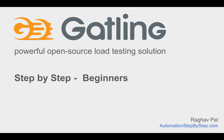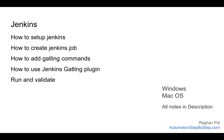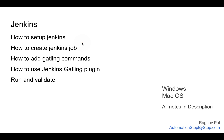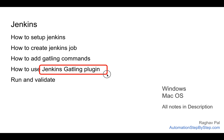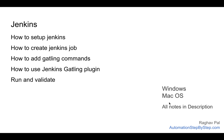Hello and welcome, I'm Raghav and today we are going to learn how we can run our Gatling tests from Jenkins CI. This is going to be very easy and interesting. We are going to see how to set up Jenkins from scratch — even if you have never worked with Jenkins, you can follow along step by step. We will do Jenkins setup, create a job, add our Gatling command, use the Jenkins Gatling plugin to see reports and trends, and finally run and validate.